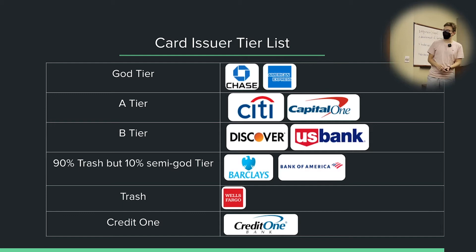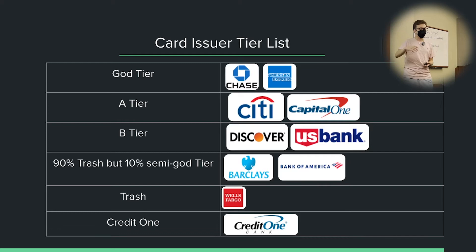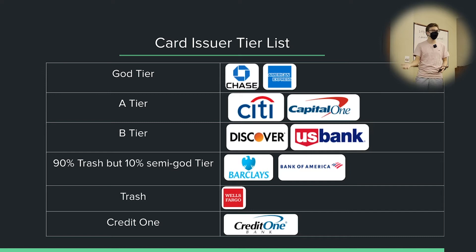Goldman Sachs — I didn't put them on the tier list because the only major card they issue is the Apple card. The interesting thing about the Apple card is you can be approved before they run your credit. They'll tell you if you're approved or not, and then if you accept the offer, they run the hard inquiry because it's effectively showing you applied for the card. If you're denied, they just tell you, or you can also decline the offer. I think it's a decent card — nothing special, but absolutely not a bad card. It's a pretty standard cashback card.